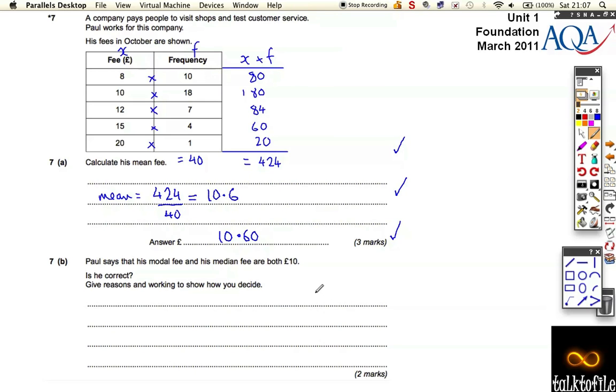Paul says that his modal fee and his median fee are both 10 pounds. Give reasons and working to show how you decide. Well, the mode means the most frequent. So in this table, the one with the most frequency is 18. So he got paid 10 pounds most often. So 10 pounds was most often fee. That shows the mode. So you get a mark for that.